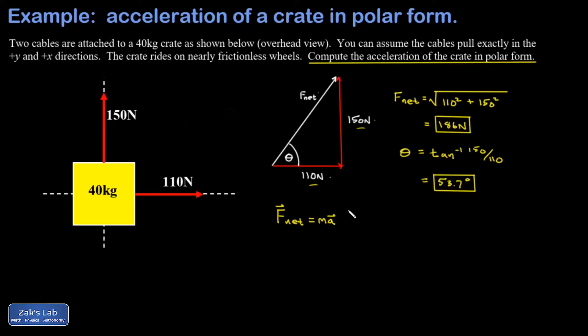As a vector equation, this makes it clear that the net force and the acceleration both point in the same direction. What I want is the magnitude of the acceleration, so I solve for a. The magnitude of a is the magnitude of F_net over m.